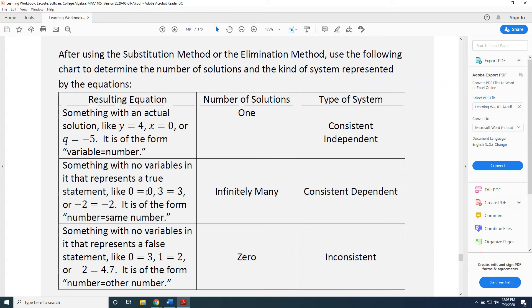If it's a true statement, like 0 equals 0, or 3 equals 3, or negative 2 equals negative 2, or generally speaking, any equation of the form number equals same number, then there are infinitely many solutions to your system, and the type of system is referred to as consistent dependent.